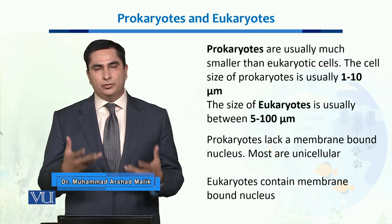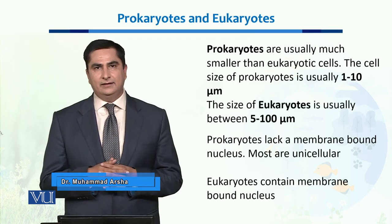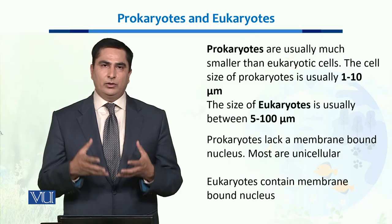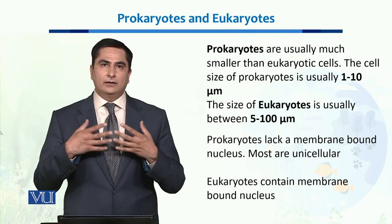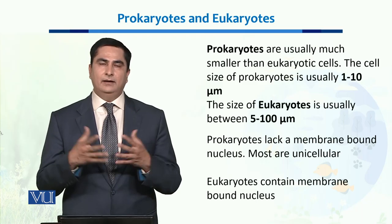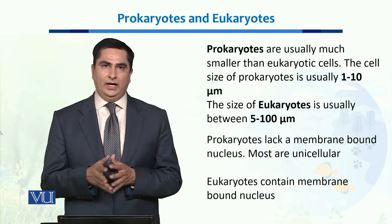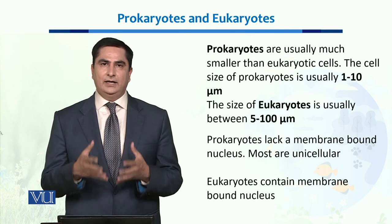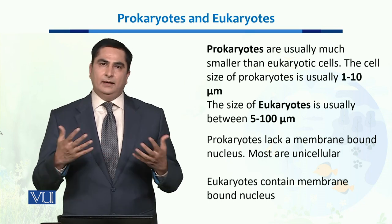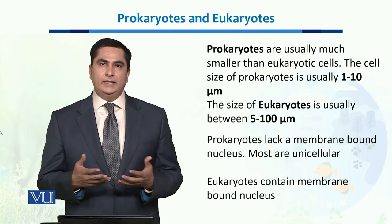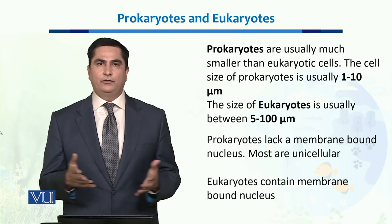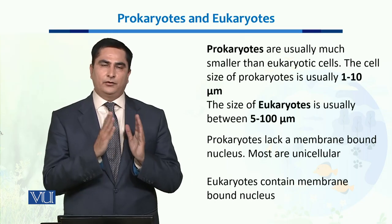The name prokaryotes indicates that they lack a membrane-bounded nucleus. The nucleus is a place where genetic material — DNA or chromosomes — resides in an organism, while eukaryotic cells have a very well-defined nucleus. Mostly prokaryotes are unicellular, while eukaryotes include a variety of different organisms.